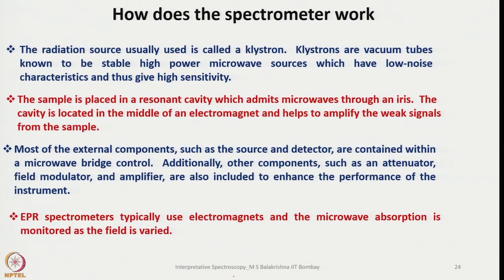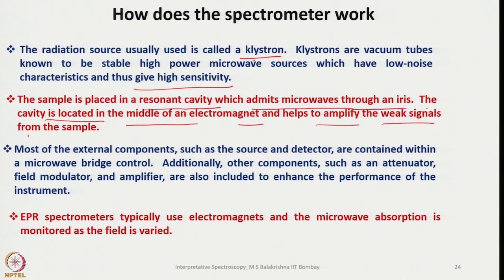The radiation source usually used is called a klystron. Klystrons are vacuum tubes known to be stable, high power microwave sources with low noise characteristics that give high intensity. The sample is placed in a resonant cavity between the magnets, which admits microwaves through an iris. The cavity is located in the middle of the electromagnet and helps to amplify the weak magnetic signals from the sample.